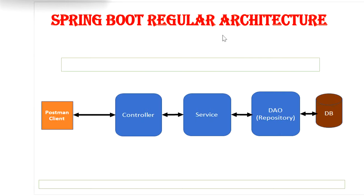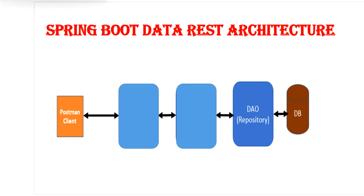In the regular architecture we follow in Spring Boot projects, the request goes from the client — say Postman — to the controller, then to the service layer, then to the DAO layer, and then it communicates with the database. But with Spring Data REST, the client sends requests directly to the DAO layer, which then communicates with the database. This reduces the layers and removes boilerplate code — no need to create any controller or service class.